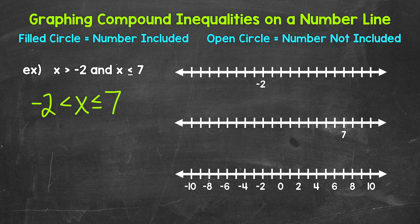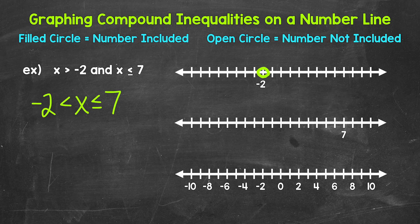Now let's graph this on a number line. This is going to give us a nice visual representation of the compound inequality. We're going to break this down into two graphs first in order to better understand what we're working with, and then we will combine everything into one. First, we have x is greater than negative 2. Negative 2 is not included, so we start with an open circle at negative 2.